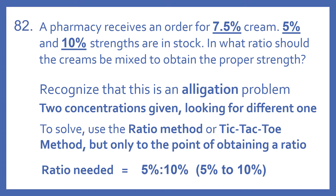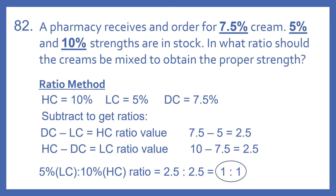So we only need to do it to the point of obtaining a ratio. We're looking for the 5% to 10% cream ratio. To do the ratio method, we take our high concentration as 10%, low concentration as 5%, and desired concentration as 7.5%. To get the high concentration ratio value, we take the desired concentration and subtract the low concentration: 7.5 minus 5 equals 2.5.